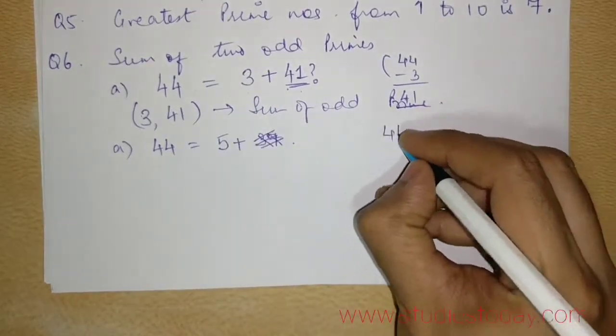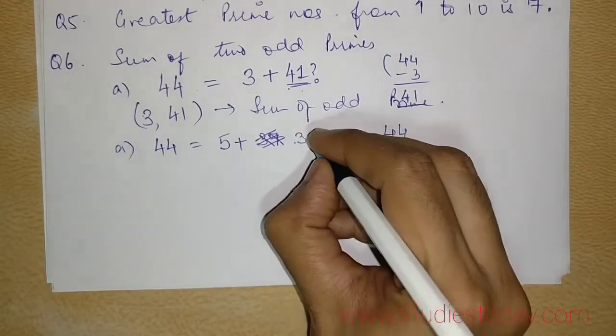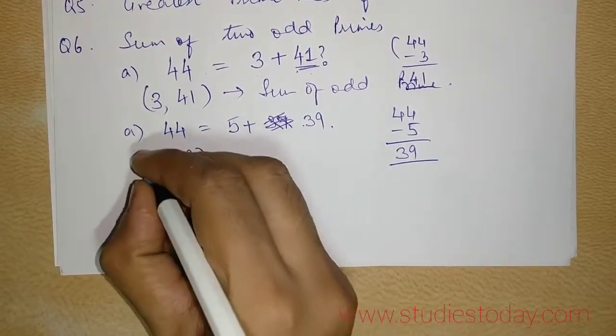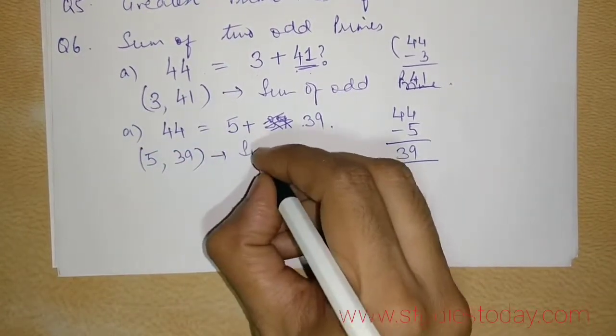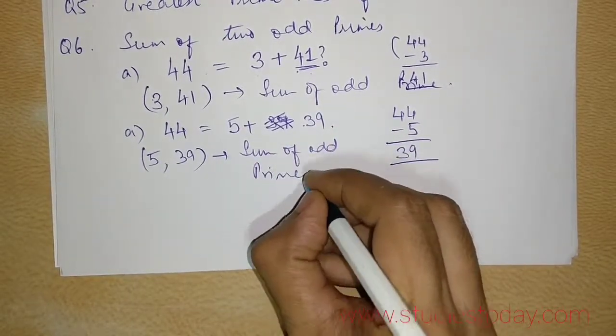So 44 minus 5 will be 39. Instead of 37, I should have written 39. Now I can see that 5, 39 are both sum of odd primes.